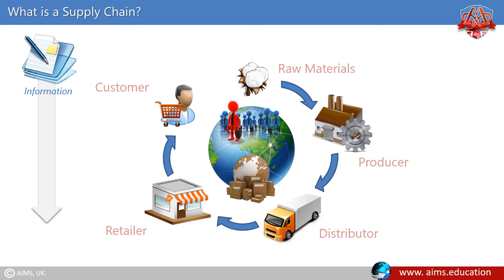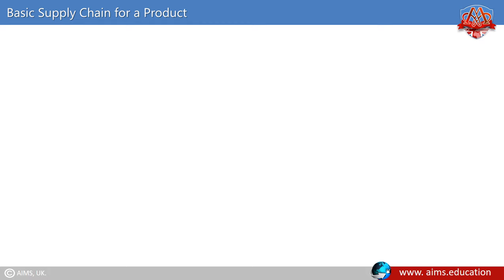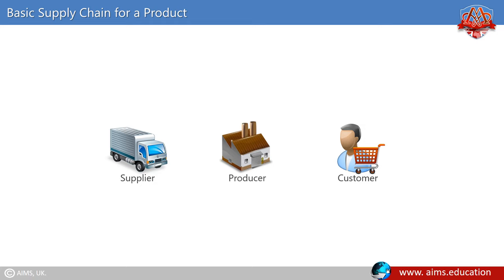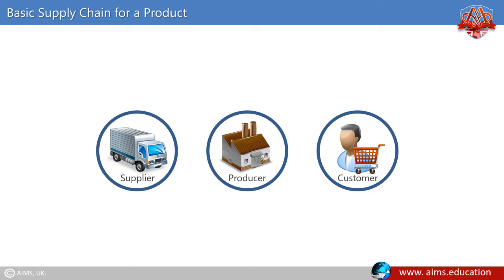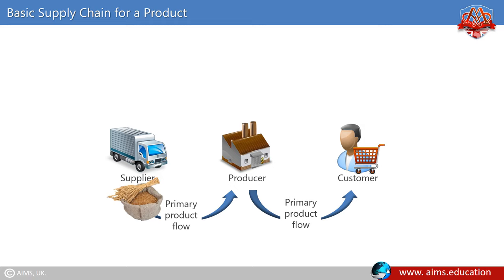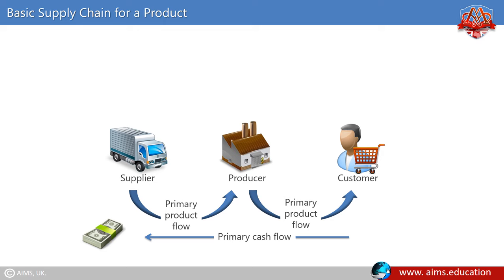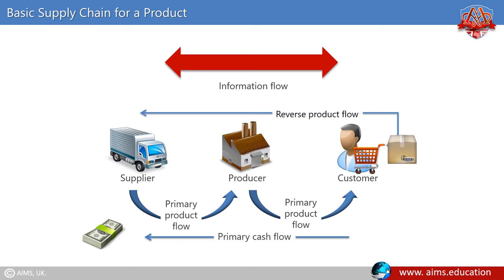Basic supply chain for a product. The below figure illustrates a very basic supply chain with three entities: a producer with one supplier and one customer. Four basic flows that connect the supply chain entities together are: flow of physical materials and services from suppliers to the end customer; flow of cash from the customer to the raw materials supplier; flow of information back and forth along the chain; and reverse flow of product returned.